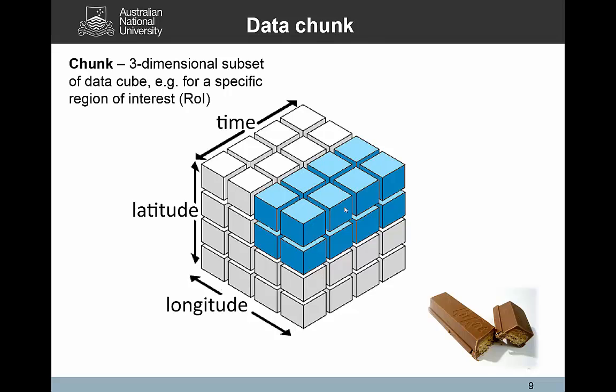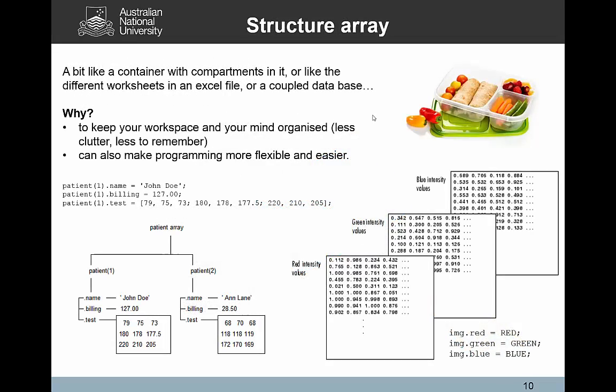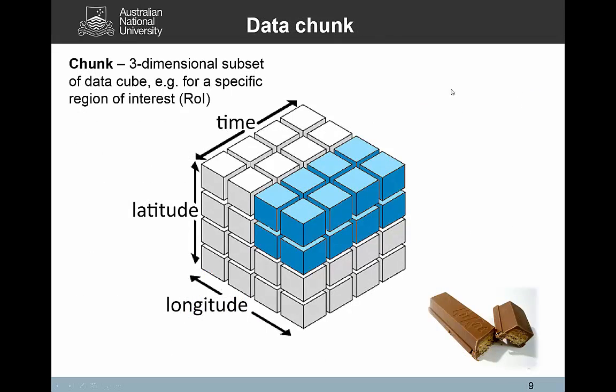A third possibility is maybe I want a data chunk. In that case, I don't want all the data. Maybe I'm only interested in Australia, I've got data for the whole world, maybe I want to cut out Australia, but I want to keep all the time periods, all the time steps. That could be one example where I might want to apply that common example. In that case, the command would look a bit different. Basically, I would have to say, give me the first to the second latitude cells, the third to the fourth longitude cells, and all the time cells.